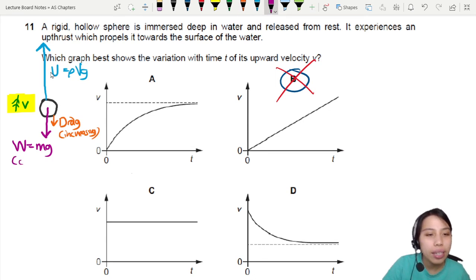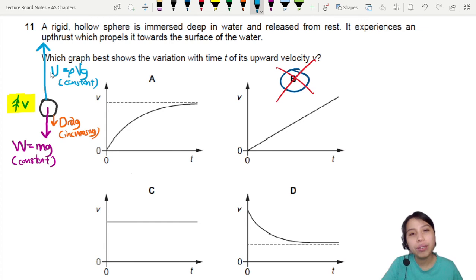Isn't that sound familiar to our dynamics one? So weight here is going to be constant. Up thrust. Is up thrust changing? The size of your object didn't change. It doesn't matter where are you in the water. It's still the same size of object, so this one can be considered to be constant. We assume the density doesn't change. So constant, constant, drag force increasing.